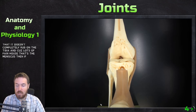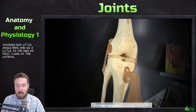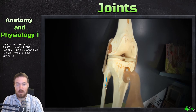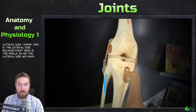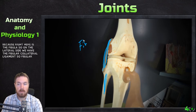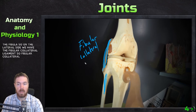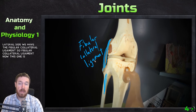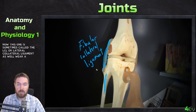Changing the angle to the side, we look at the lateral side first. We know it's the lateral side because the fibula is visible right there. On the lateral side we have the fibular collateral ligament, sometimes also called the LCL or lateral collateral ligament.